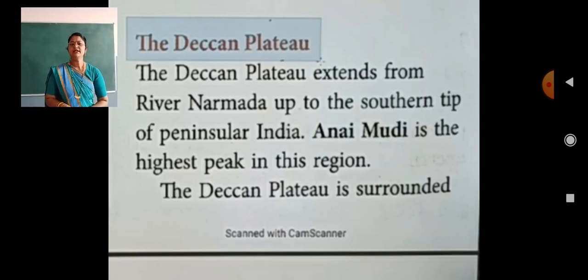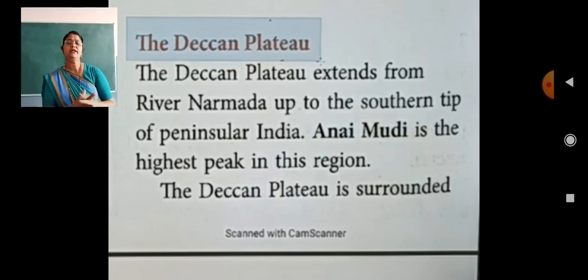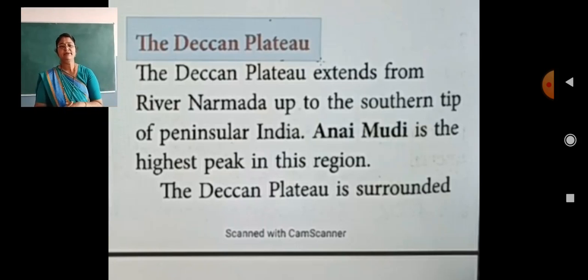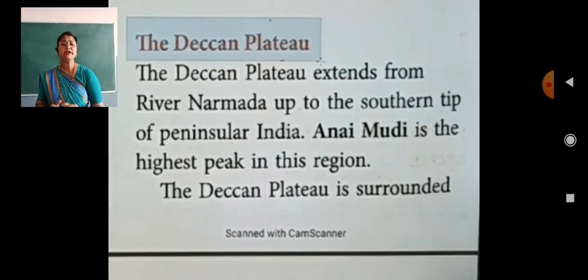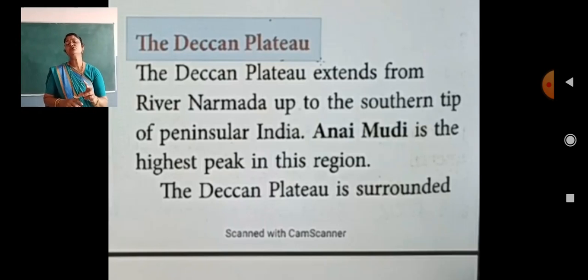The Deccan Plateau extends from the Narmada River to the southern tip of Peninsular India. Peninsular India means the side of India surrounded on three sides — Bay of Bengal to the east, Arabian Sea to the west, and the Indian Ocean to the south. That side is called the Peninsular side.